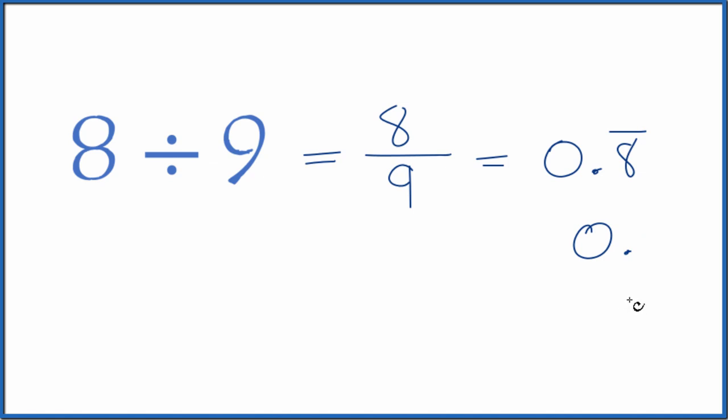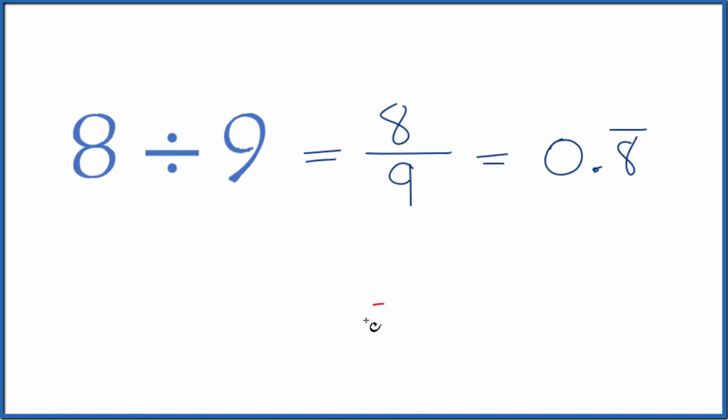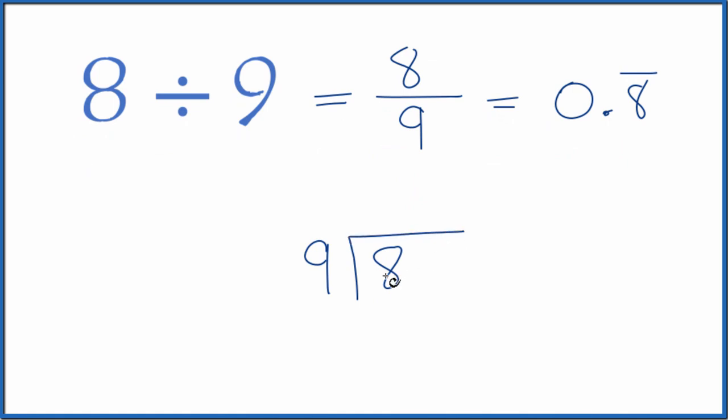Let's also do this longhand. So let's take 8 and see how many times 9 will go into 8. It doesn't go into 8. And we can call this 80, as long as we put a 0 with a point up here. Now, 8 times 9 is 72. When we subtract, we get 8.